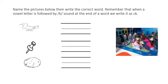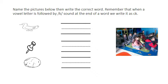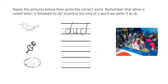In this exercise, you have to name the pictures below and then write the correct word. I want you to remember that if we have a vowel letter and the word ends with K sound, how do we write this concept? C and K. Excellent. What's the first picture? Duck. Can you spell it for me? D, U, C, K. Duck.